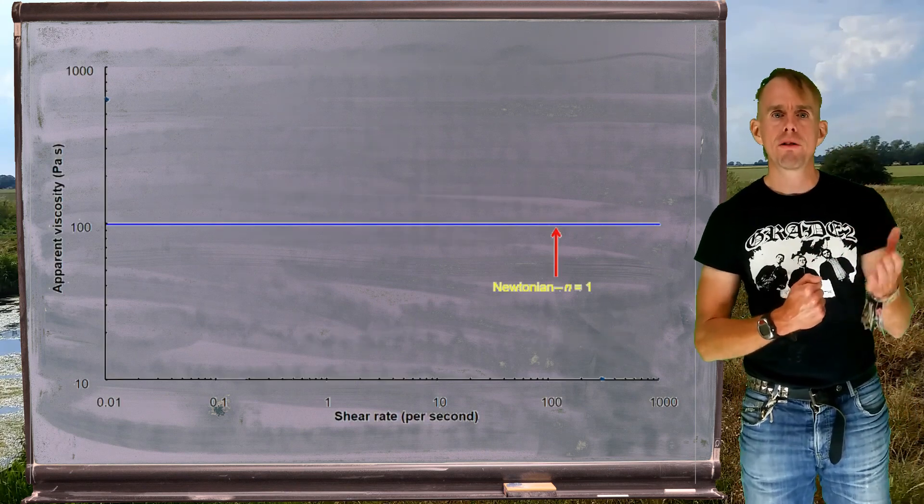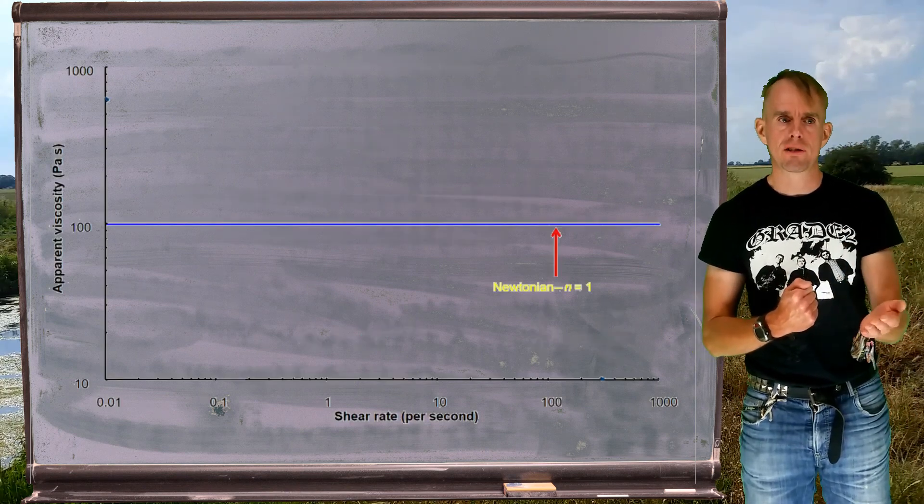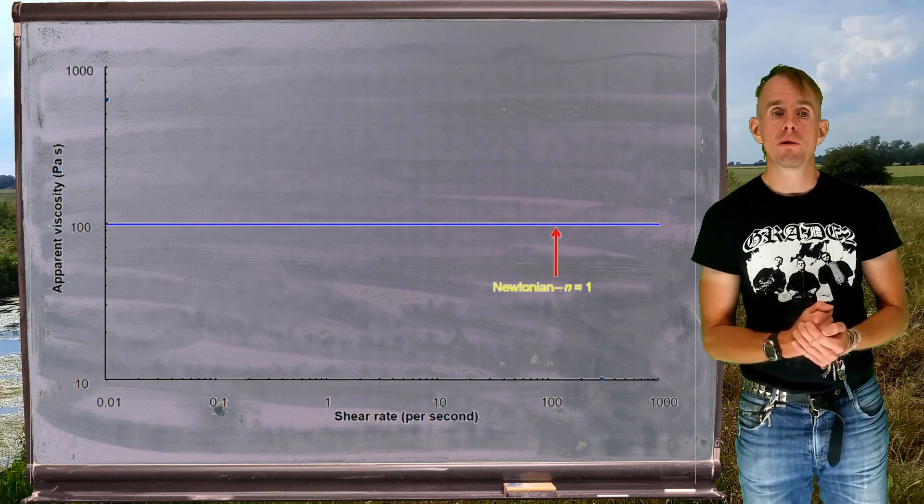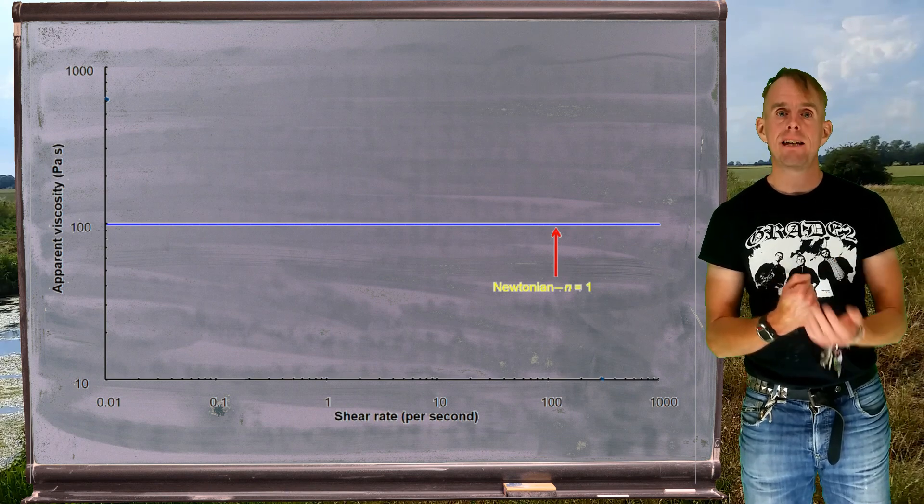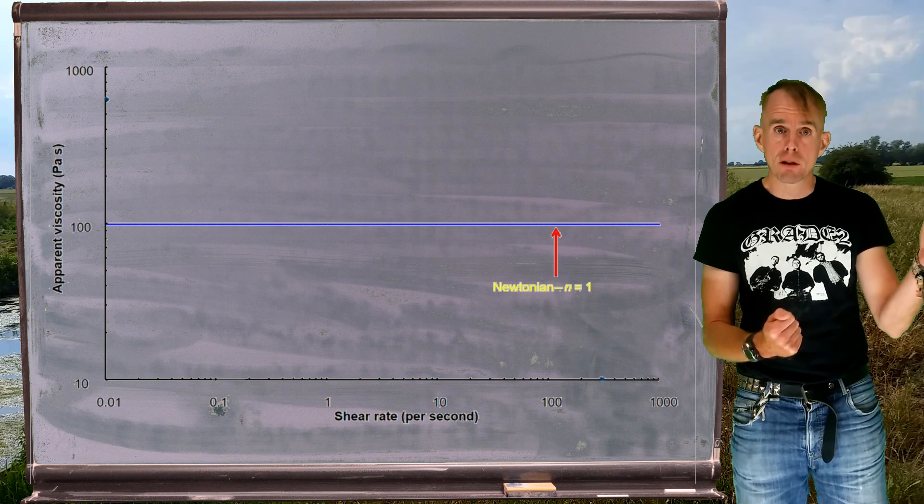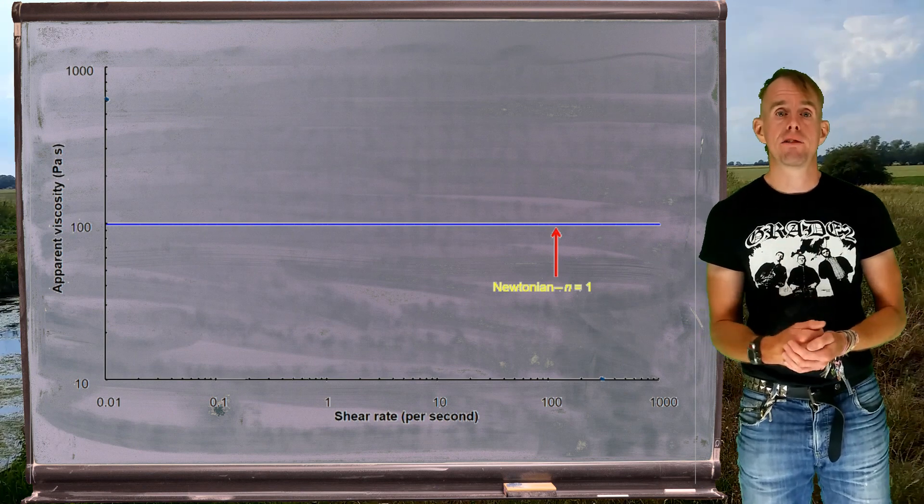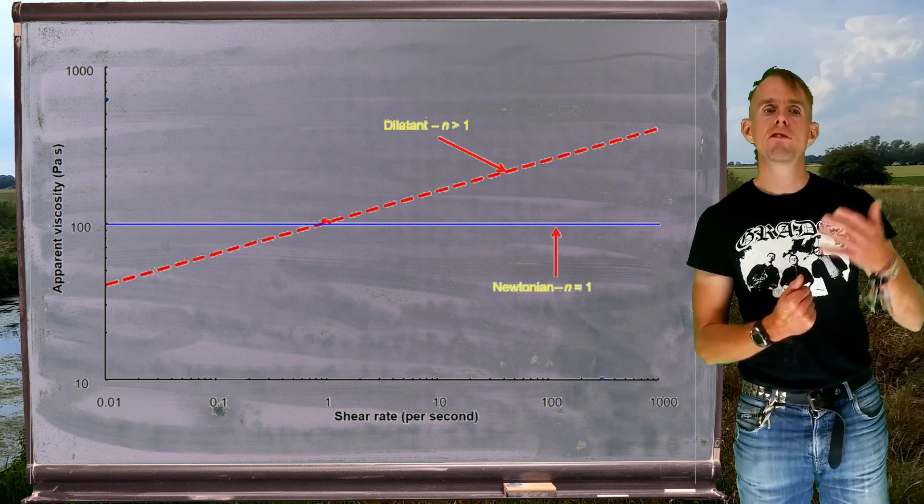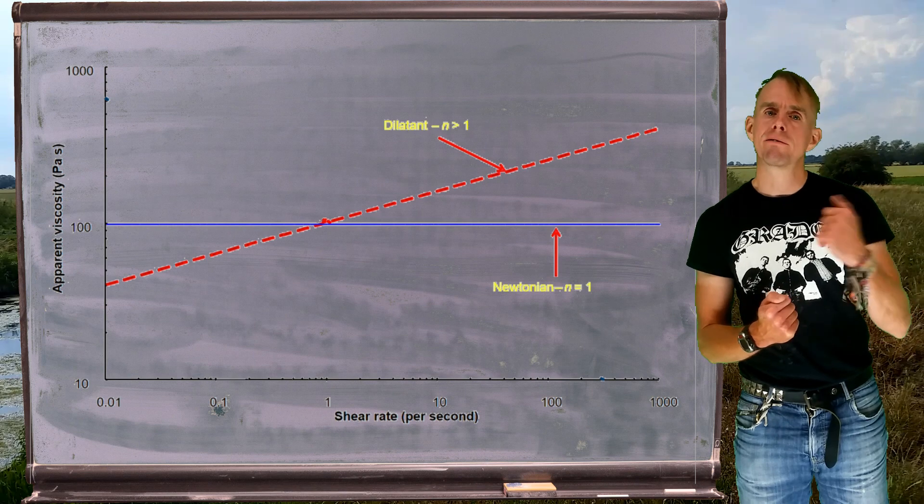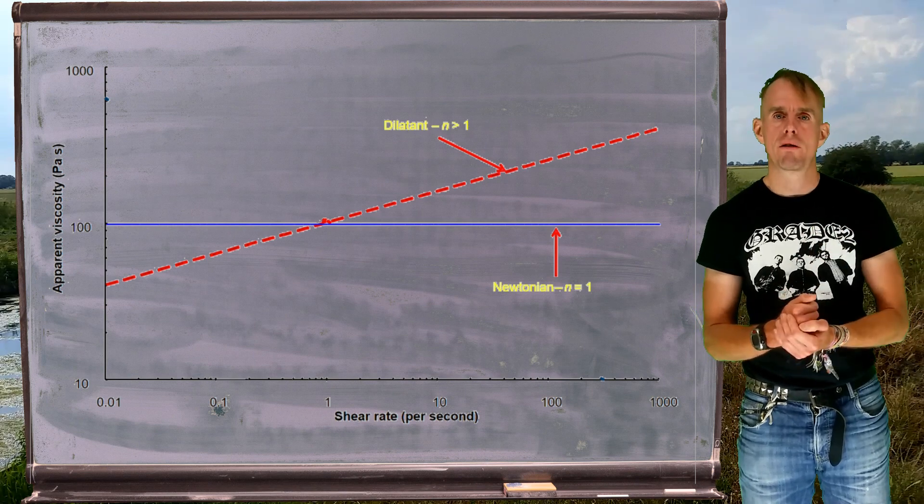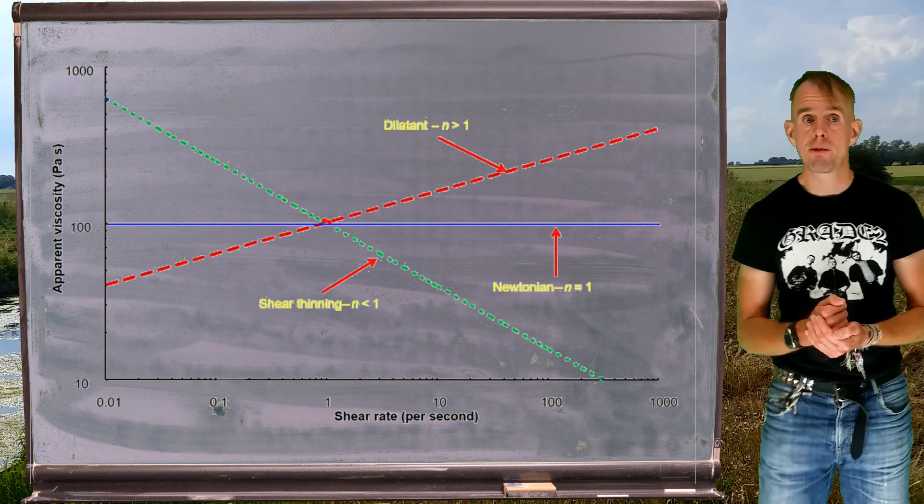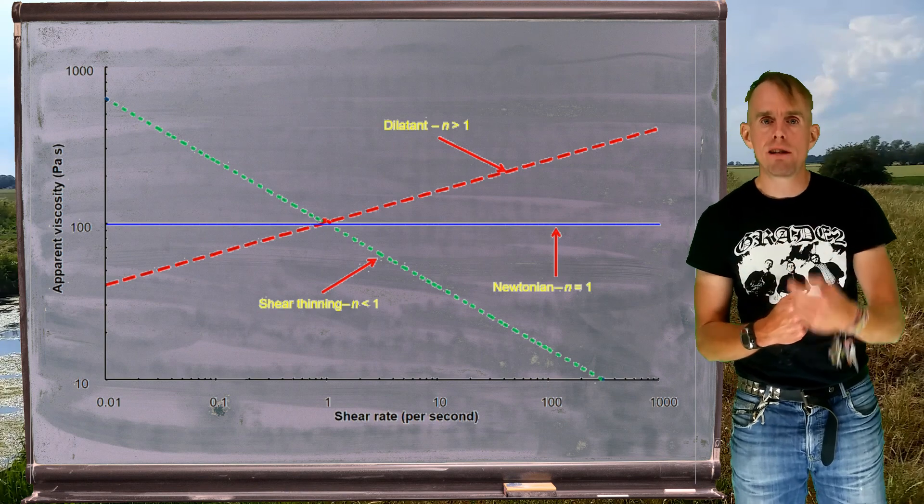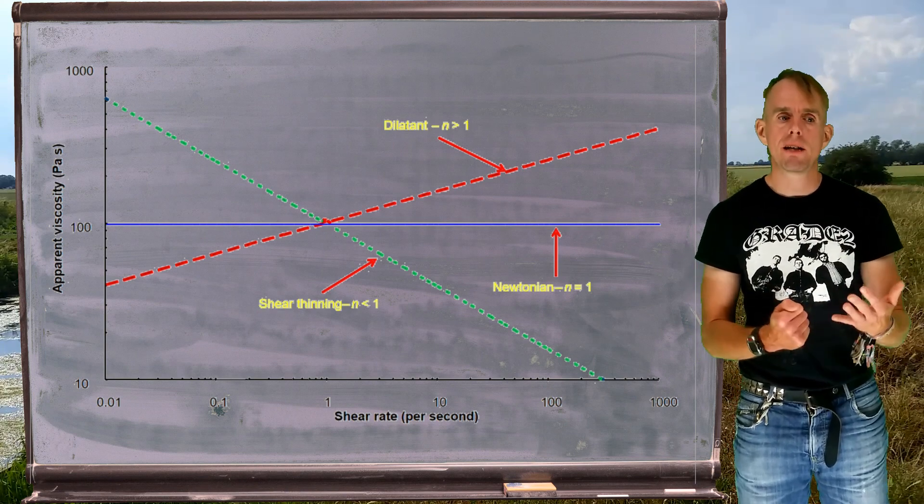So, let's now examine what the power law constitutive model predicts. I'm again plotting apparent viscosity as a function of shear rate, and the blue line there on the board is for my power law index n equals 1, which we know is a Newtonian fluid. So, there we have a constant viscosity as a function of shear rate. Now, if n is greater than 1, we have dilatant behavior, increasing apparent viscosity with increasing shear rate. We've already said if n is less than 1, we have shear thinning behavior. Note that we don't have a plateau, but we do have decreasing apparent viscosity with increasing shear rate.